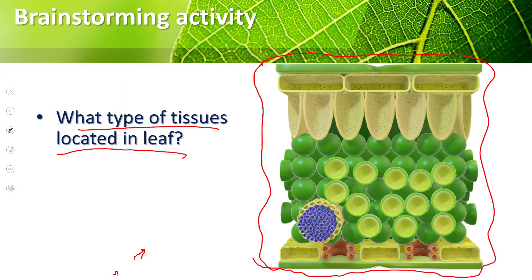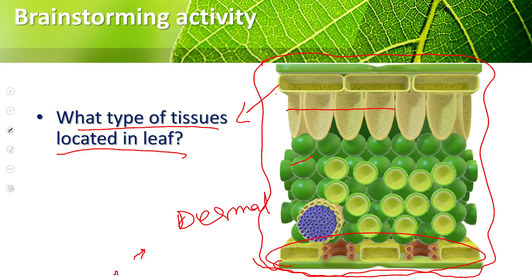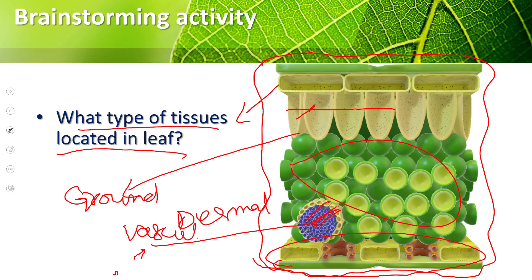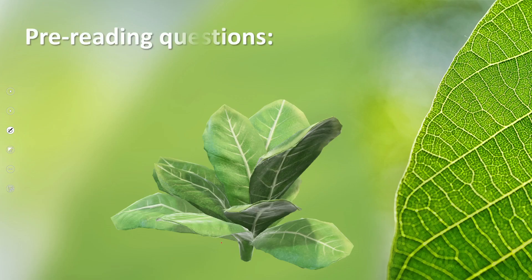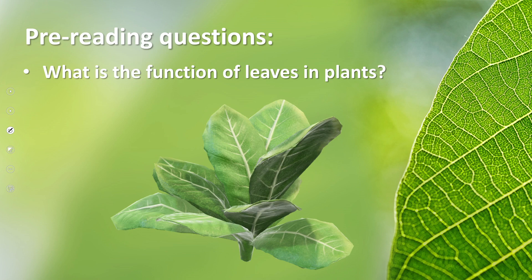Leaves have upper and lower epidermis located here, and these vessels are vascular tissues. So my dear students, quickly tell me the answer of this question. What is the function of leaves in plants?